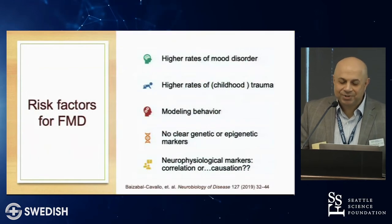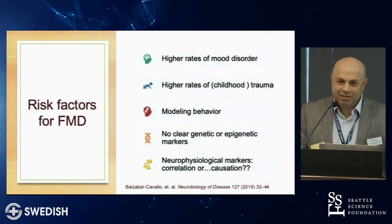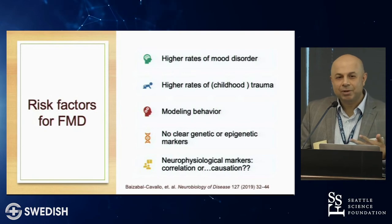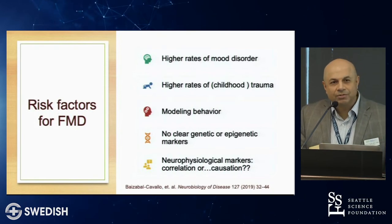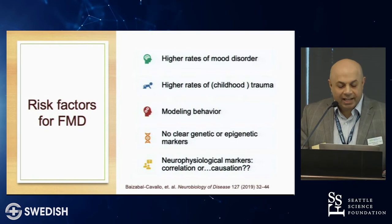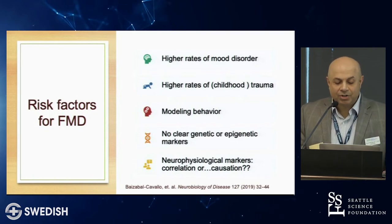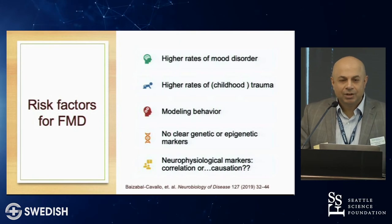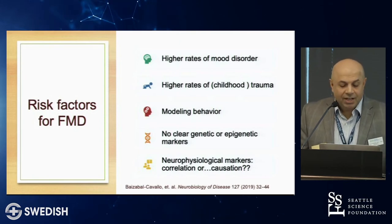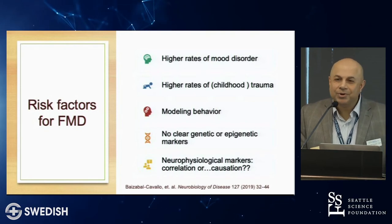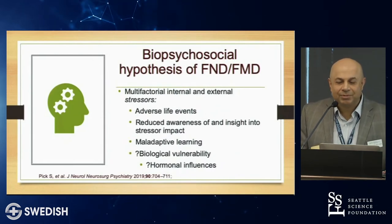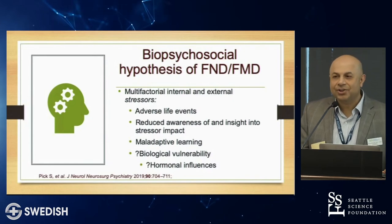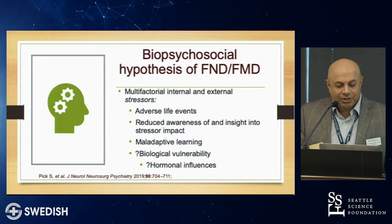Risk factors for functional movement disorders include higher rates of mood disorder — at least 60 to 70 percent of people have them. Childhood trauma, modeling behavior — someone else in the family has epilepsy or tremor, and with the right mix of biopsychosocial stressors, you develop a tremor. Genetic markers are not really clear. The biopsychosocial hypothesis suggests multiple internal and external factors give genesis to functional movement disorders, including life events, maladaptive learning, biological vulnerability, and hormonal influences — the latter contributing to the female-to-male ratio.